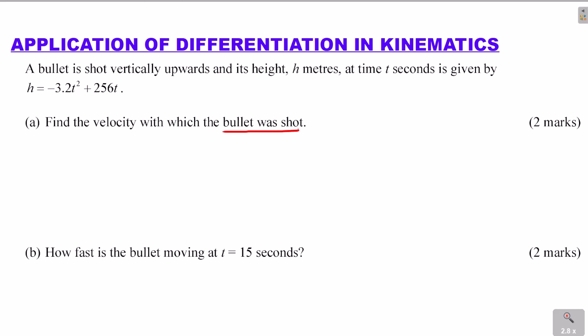How do you find velocity given the displacement or the height? Let me remind ourselves about kinematics. When you're given distance s, we differentiate distance to get velocity, then differentiate velocity to get acceleration. When moving in the opposite direction — if given velocity and required to get displacement, or given acceleration and required to get velocity — you integrate.